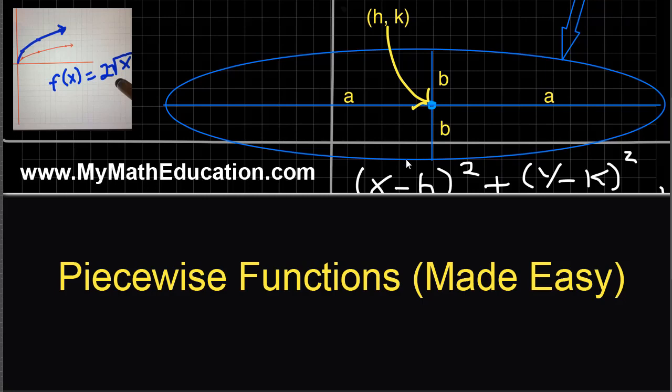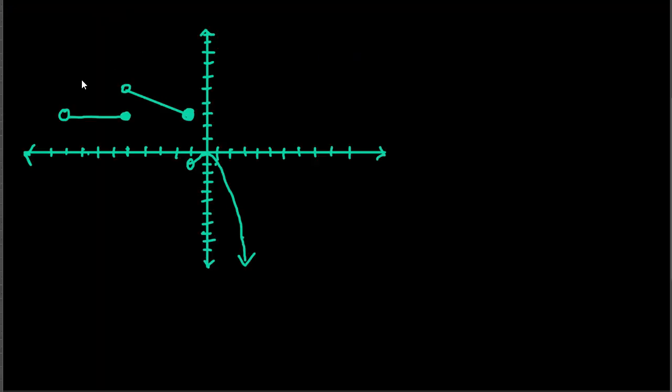Let's take a look at an example. Here I have a graph of a piecewise function. Notice there's three pieces: one, two, and three. The first thing I want to do is write this function out in function notation and show each of those three intervals. So here's how I do it.